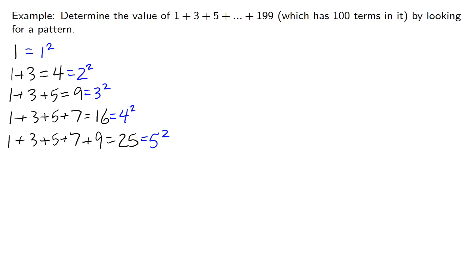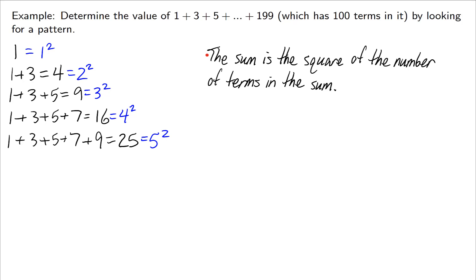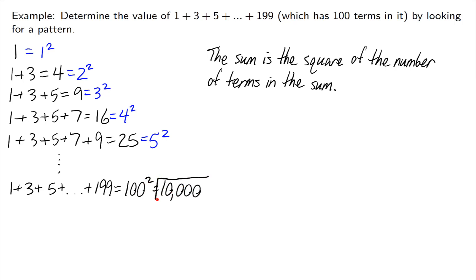Let's write down the pattern: the sum is the square of the number of terms in the sum. With that said, this now makes the original problem easy. If I add up all the numbers from 1 to 199 that are odd, there are 100 numbers, so I get 100 squared, which is 10,000. This would be much harder and more error-prone on a calculator — it's faster to look for patterns.